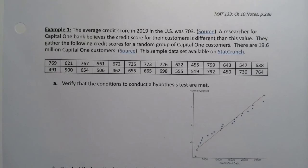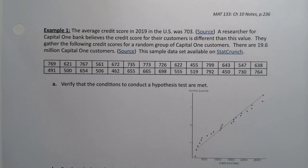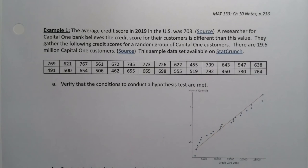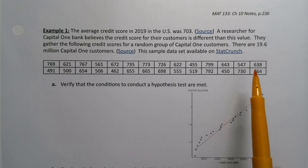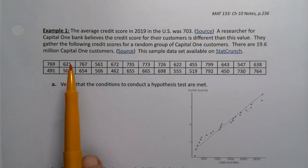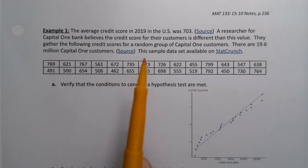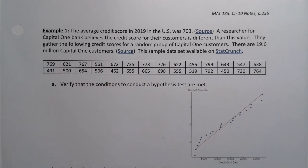All right. So we have the average credit score in 2019 in the U.S. was 703. This is an actual number, in case you're wondering. It came from a real data source. So a researcher for Capital One Bank believes the credit score for their customers is different than this value. They gather the following credit scores for a random group of Capital One customers. Yes, these are real data as well. There are 19.6 million Capital One customers.